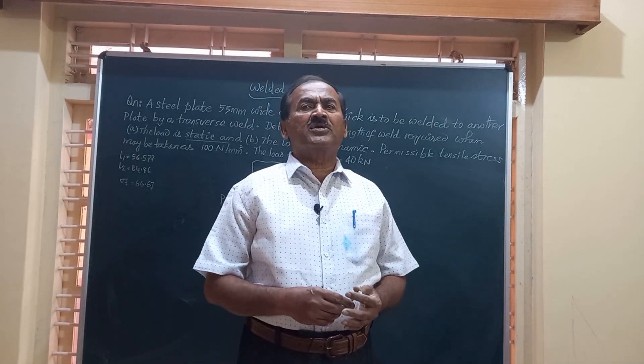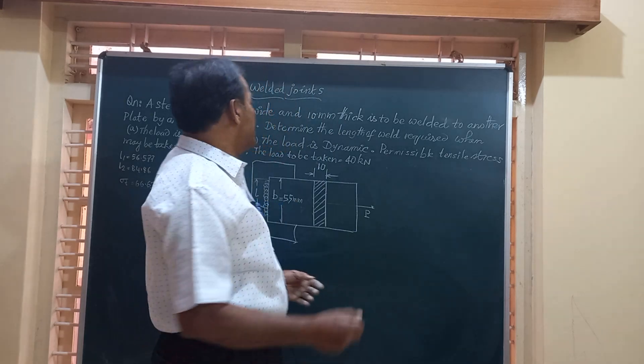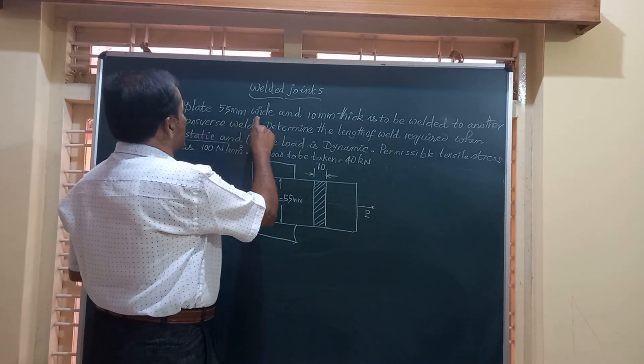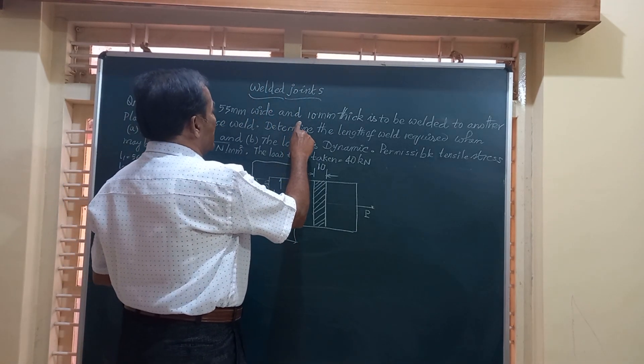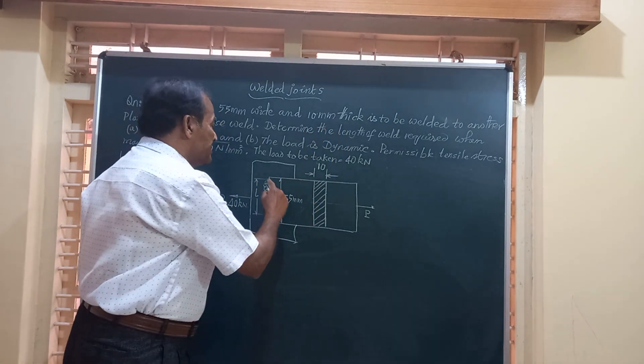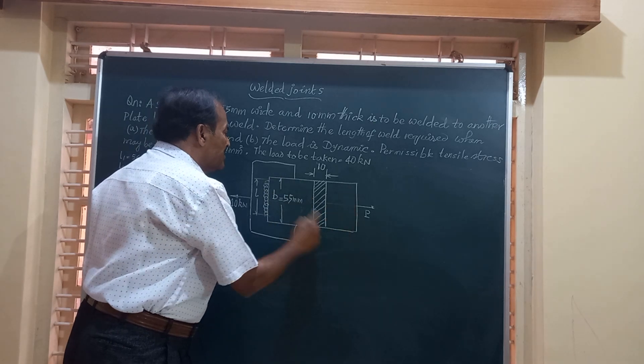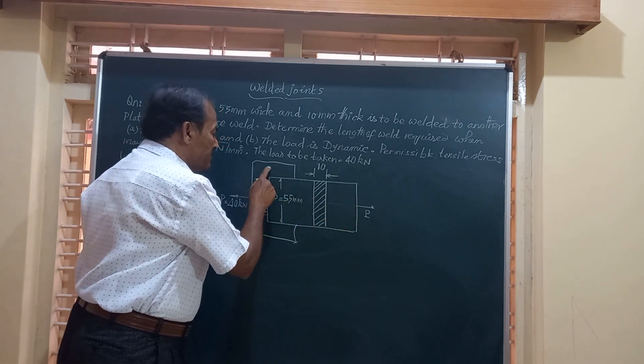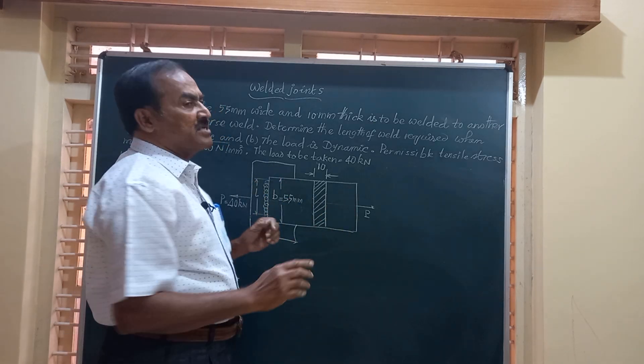Friends, the question for today's video reads like this: a steel plate of 55 millimeter wide and 10 millimeter thick is to be welded to another plate. I have written the diagram here. This is a plate which is to be welded to the second plate by transverse weld.